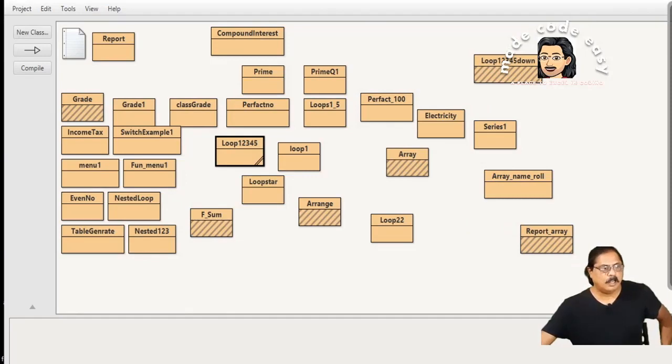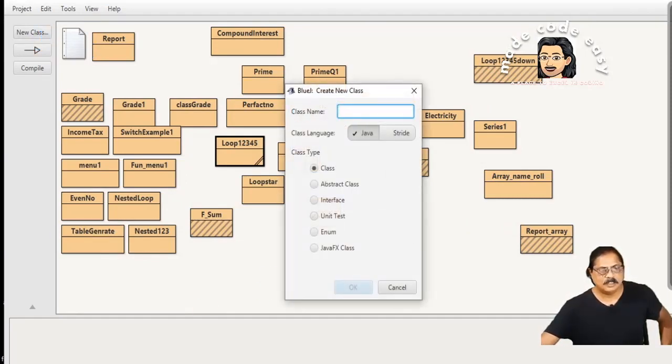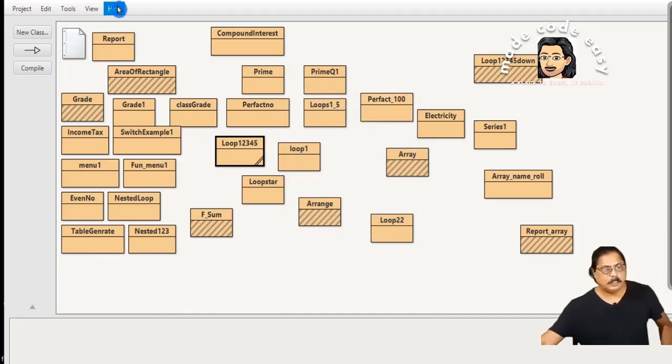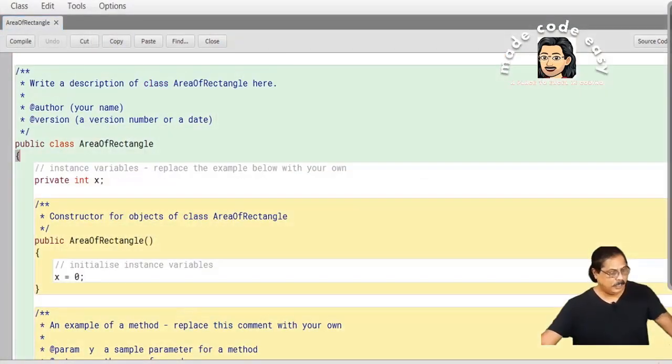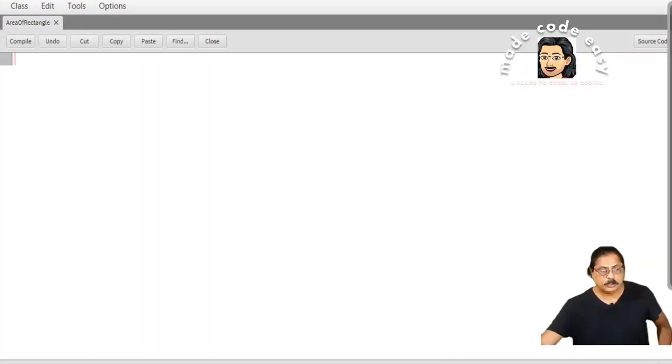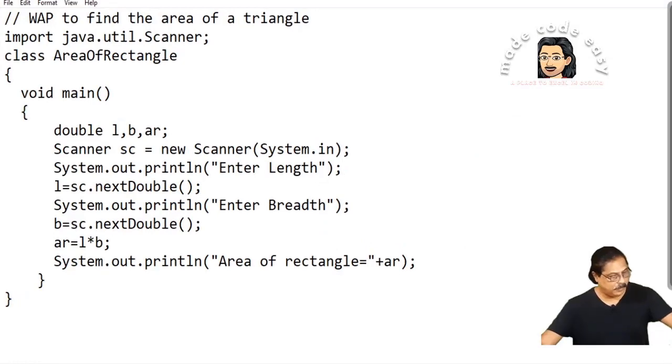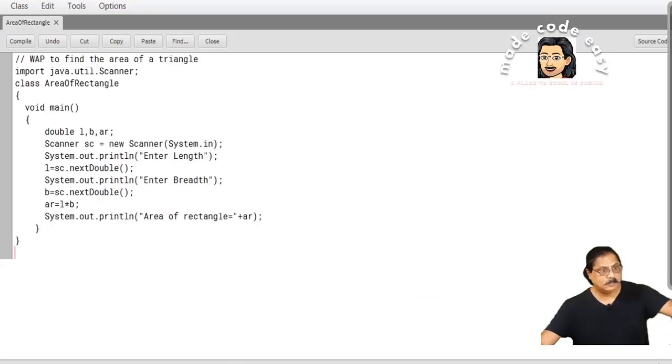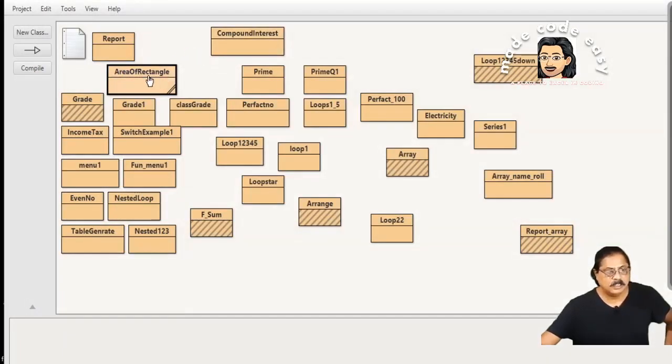So we will click on here new class. What we want to make? AreaOfRectangle. We will click on this and you have to make a program. I have already made, so I'll open it. This notepad, here I made the program. I'll copy it and I'll paste it. So this is the program we have to type it in BlueJ. Here we click on compile. You see here, no syntax error. We close it.